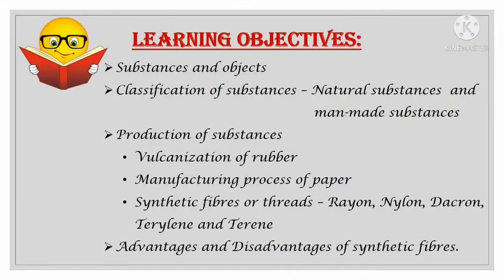In the subject General Science, chapter: Substances in Daily Use, the learning objectives are: substances and objects, classification of substances, natural substances and man-made substances, production of substances, vulcanization of rubber, manufacturing process of paper, and synthetic fibers or threads — that is, rayon, nylon, dacron, and terylene.